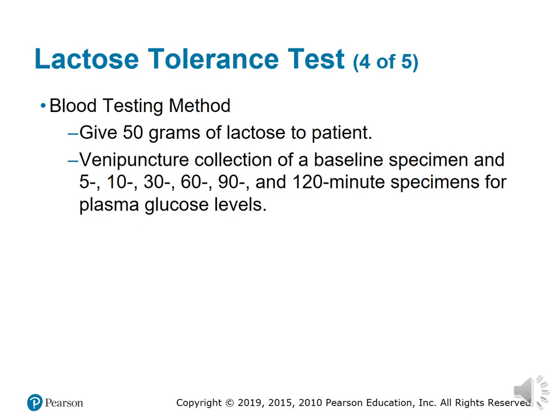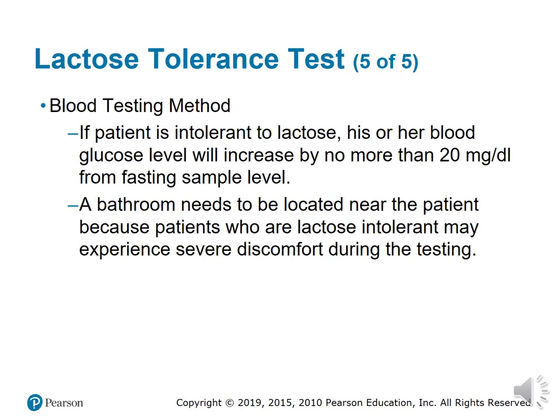For the blood test method of lactose intolerance testing: after giving 50 grams of lactose to the patient, collect a baseline venipuncture specimen and additional specimens at 5-, 10-, 30-, 60-, 90-, and 120-minute intervals for plasma glucose levels. If the patient is intolerant to lactose, blood glucose levels will increase by more than 20 milligrams from the fasting sample level.